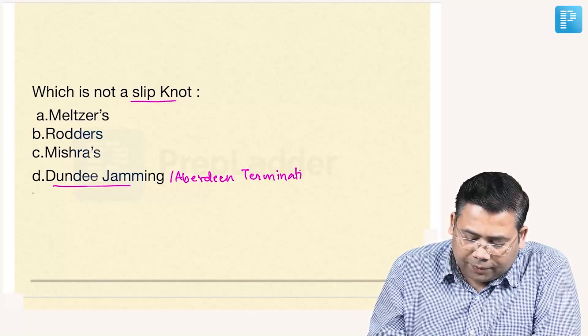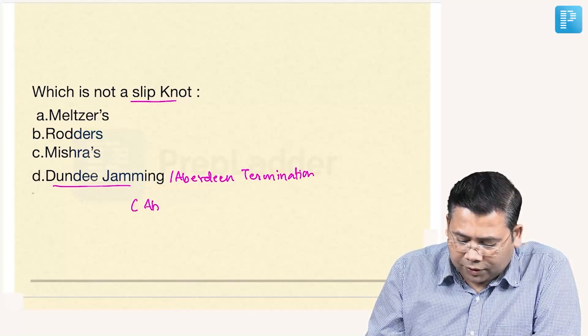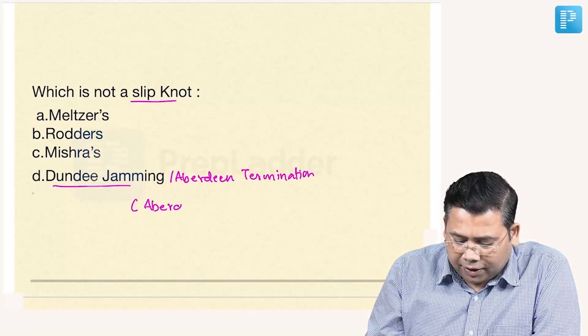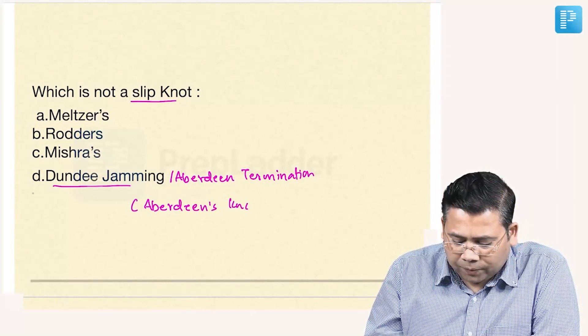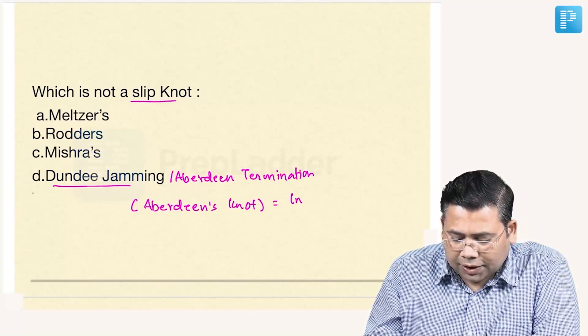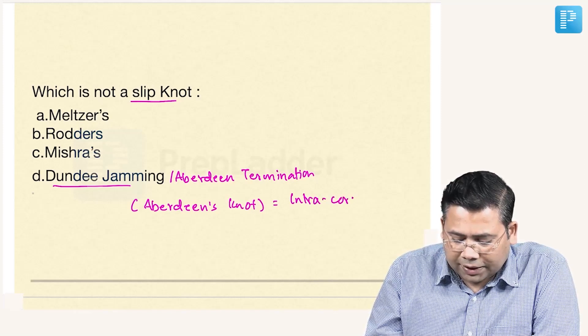Dundee jamming and Aberdeen termination — this is popularly known as Aberdeen's knot. Aberdeen's knot is intracorporeal, that is, it is made inside the body.